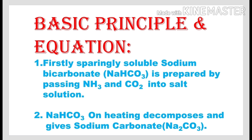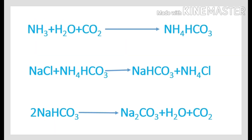Firstly, in this process, Sodium Bicarbonate is prepared by passing Ammonia and Carbon Dioxide gas into the Brine Solution. Then the Sodium Bicarbonate is heated to get solid Sodium Carbonate. When Ammonia and Carbon Dioxide are passed into the Brine Solution, first Ammonia and Carbon Dioxide react with each other in the presence of water to form Ammonium Bicarbonate. This Ammonium Bicarbonate in turn reacts with Sodium Chloride to give Sodium Bicarbonate, and the Sodium Bicarbonate on heating gives solid Sodium Carbonate.